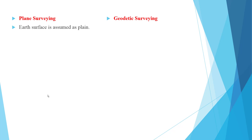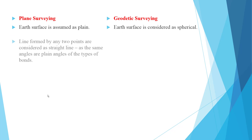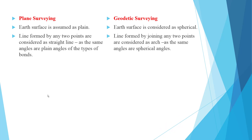In plane surveying, the earth's surface is assumed as a plane, and lines formed by any two points are considered as straight lines, with angles treated as plane angles. In geodetic surveying, the earth's surface is considered as spherical, and lines formed by joining any two points are considered as arcs, with angles treated as spherical angles.